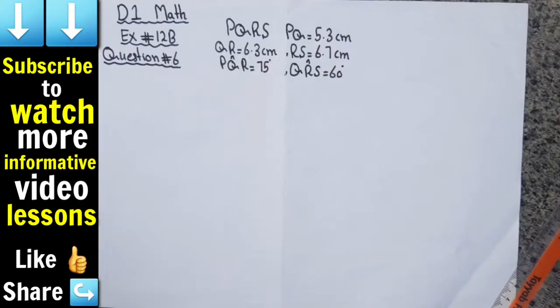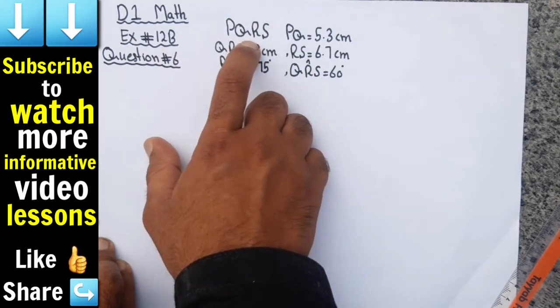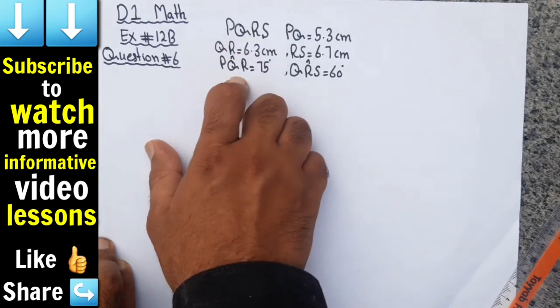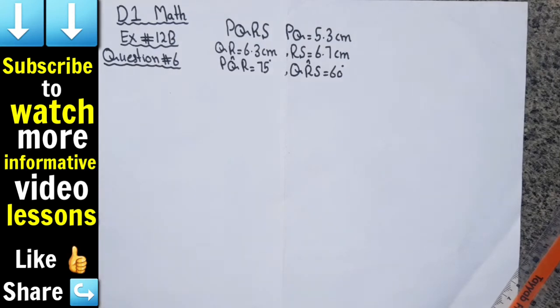Assalamu alaikum dear students, welcome to my channel. In this video we will solve question number 6 of exercise 12B. We have to construct a quadrilateral PQRS. If you want the complete solution of this exercise, you can click on the i button above this video and find the complete playlist on my channel. Let's start this question.